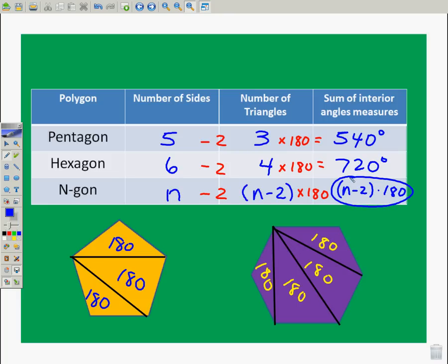If I have a shape with 100 sides, it'd be a little bit difficult to draw, but if it has 100 sides, I'm going to do n minus 2. So, 100 minus 2 times 180. That's going to give me the interior angle measures. Interior angle measures. So, that's the inside of the shape.